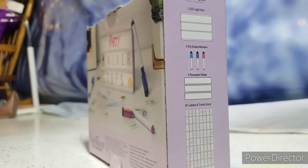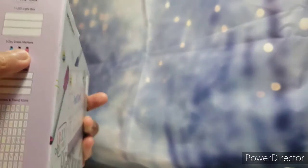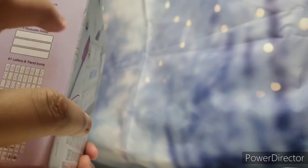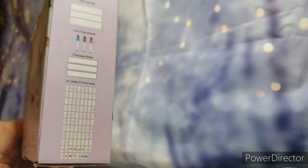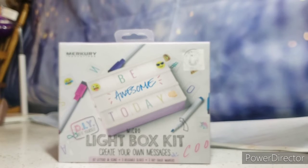On the side you can read what it basically comes with. It comes with the box, LED one LED light box, three markers with the little erasers on the top, three little sliders to go in there, and look at all these letters guys. So I'm very excited to open this, okay let's open this.